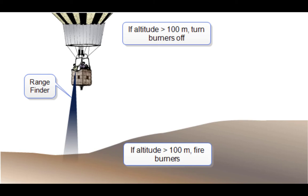So if the altitude is too high then they're going to turn the burners off and allow the balloon to slowly drift downward. If the altitude is too low they're going to turn the burners on and cause the balloon to lift up.